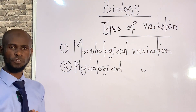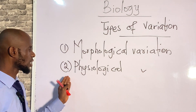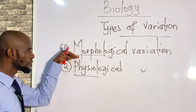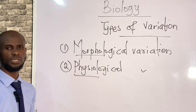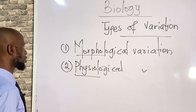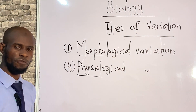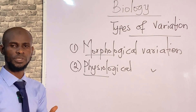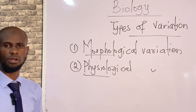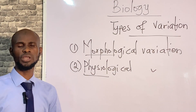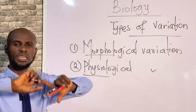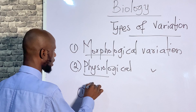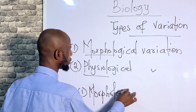So what is morphological? Morphology means the structure, while physiology means the function. Morphological variation is a type of variation that is expressed in the physical appearance — that is the morphology — in the shape or the physical appearance of an individual.